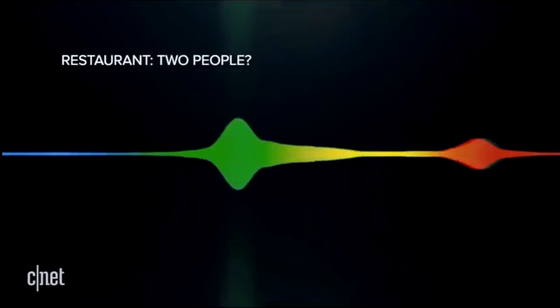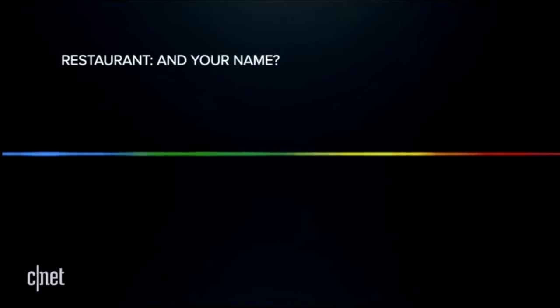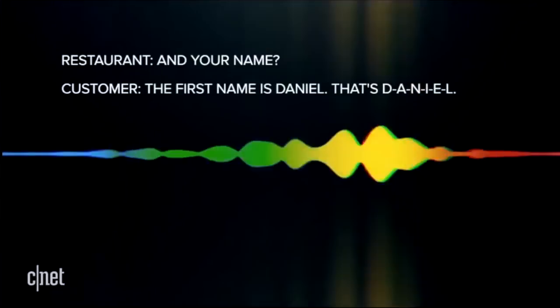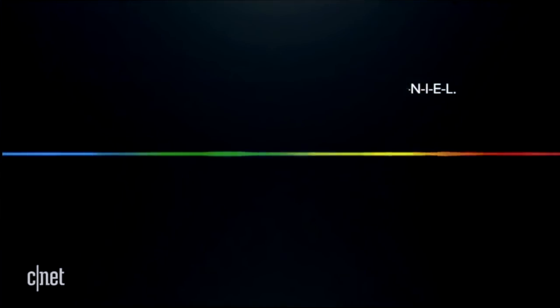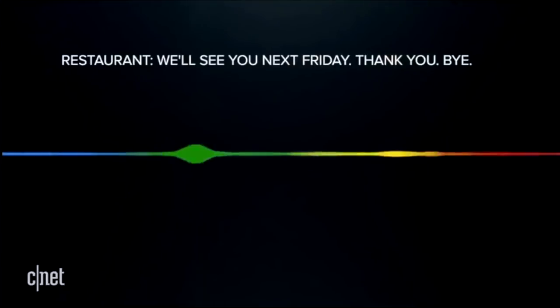So Friday, November 3rd, how many people? Two people. Yeah. What time? At 5 p.m. Okay. And your name? The first name is Daniel. Okay, you're all set. Okay, great, thanks. We'll see you next Friday. Thank you. Bye.